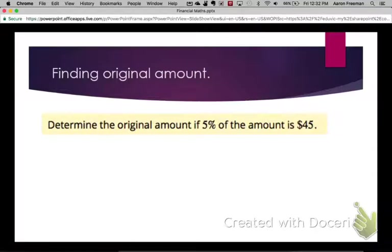Now we're going to find the original amount, so the 100% cost, if we know what the percentage we've currently got. In this question, we have 5% is equal to $45.